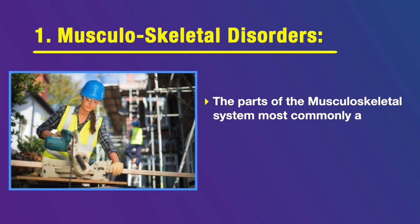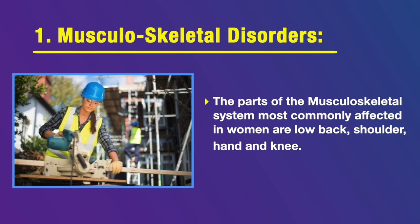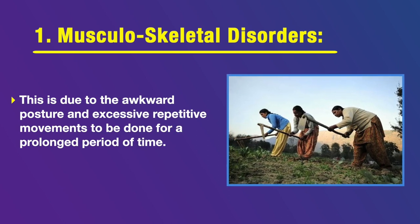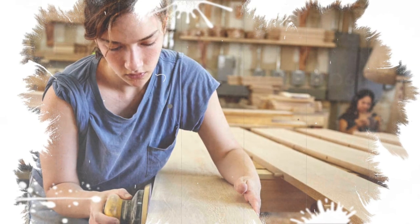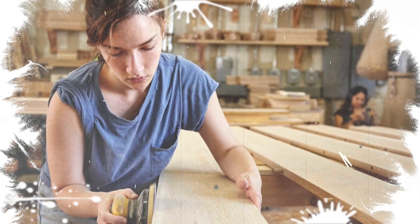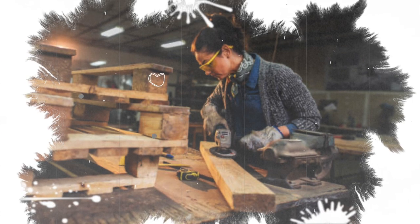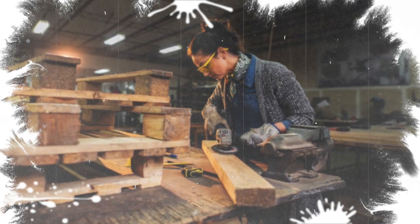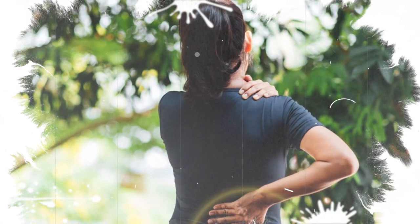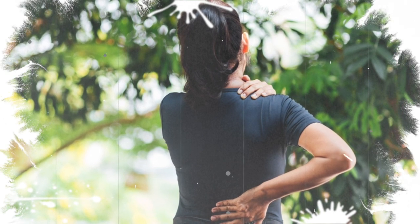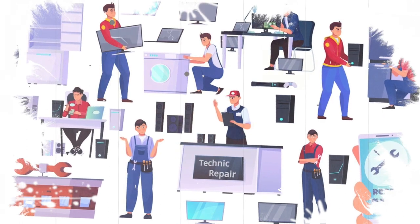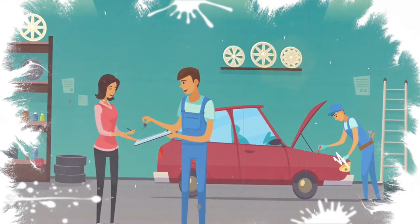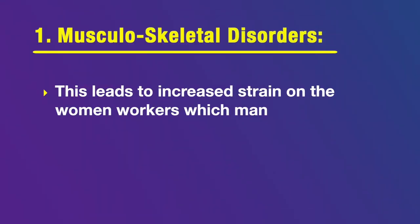Parts of the musculoskeletal system commonly affected in women include lower back pain, shoulder pain, hand pain, and knee pain — all due to awkward posture and excessive repetitive movements over prolonged periods. For example, a woman polishing a wooden surface in the furniture manufacturing industry may maintain a fixed posture for a couple of hours, experiencing mechanical vibration from the instrument leading to shoulder, hand, and back pain. In mechanical jobs, most tools, equipment, and workstations have been designed for the average male height and are not suited from an ergonomic point of view for women, leading to increased strain on the neck and other health problems.